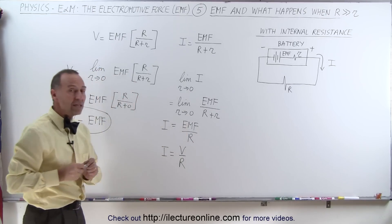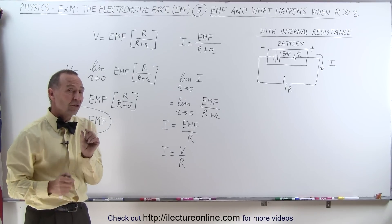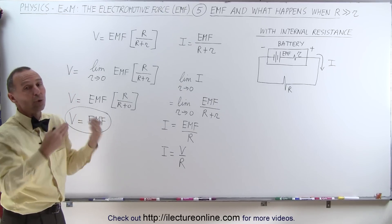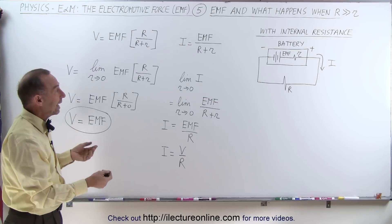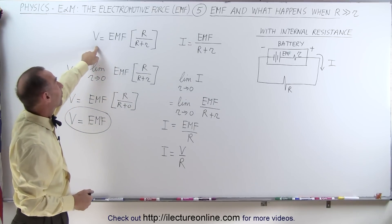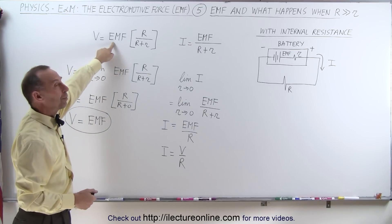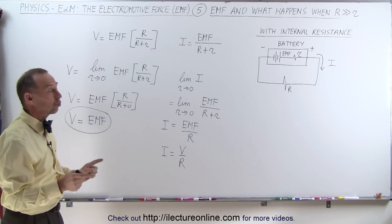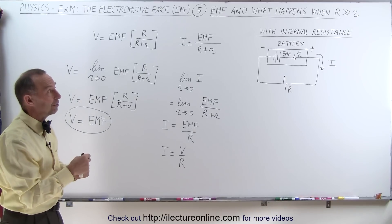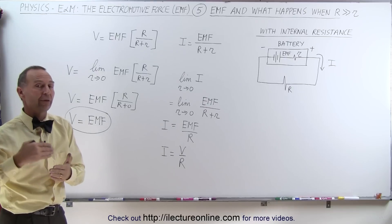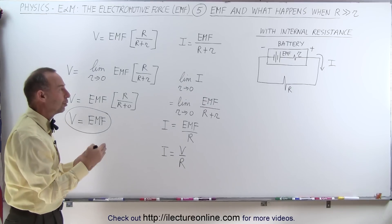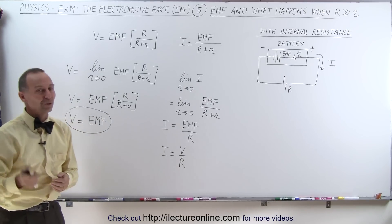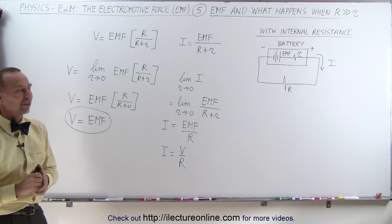So what we're saying here is: if the internal resistance is really small compared to the resistance of the circuit, we can basically ignore the internal resistance, and the voltage provided by the battery essentially becomes the emf of the battery. In the next video we're going to swap — we'll ask what happens if the internal resistance becomes very large relative to the resistance of the circuit. Stay tuned to see what happens in the next video.